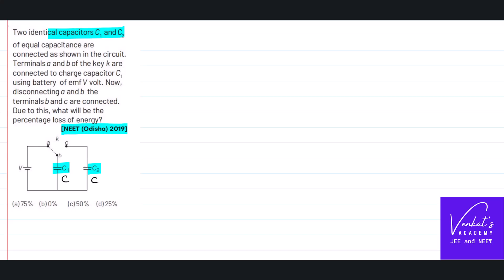Of equal capacitance C, shown connected as shown. Terminals A and B and the key are connected to charge capacitor C1. See, this is the first case. We are connected using a battery of emf V.